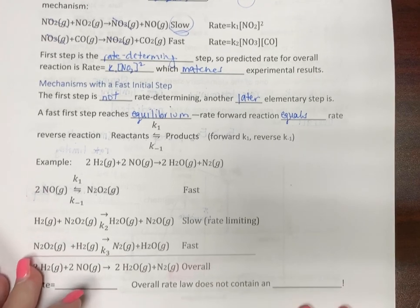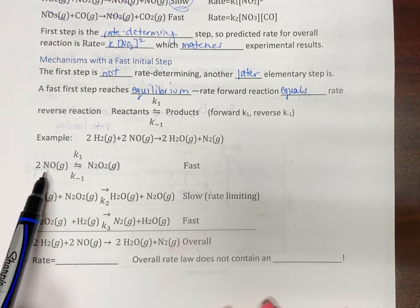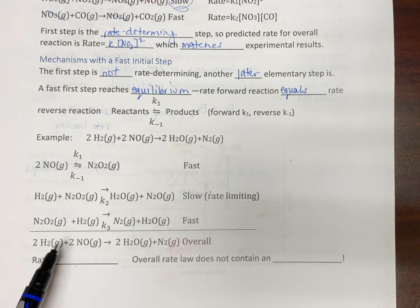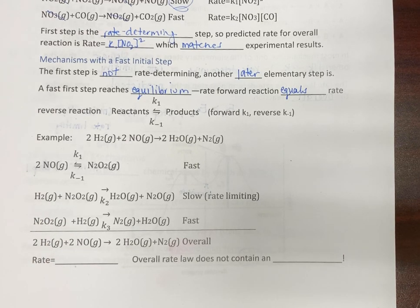So here, we have a three-step proposed mechanism where, let's see, let's cancel some stuff out.